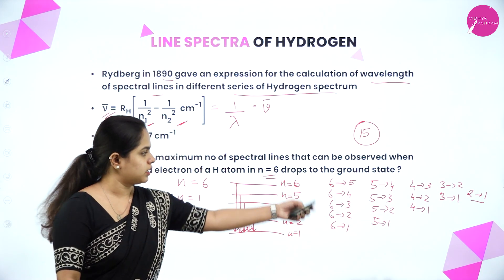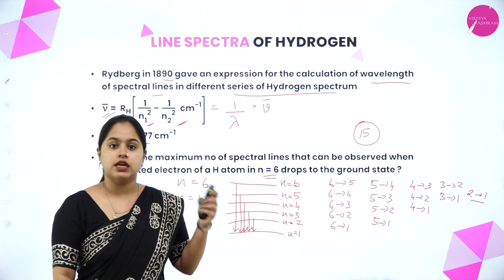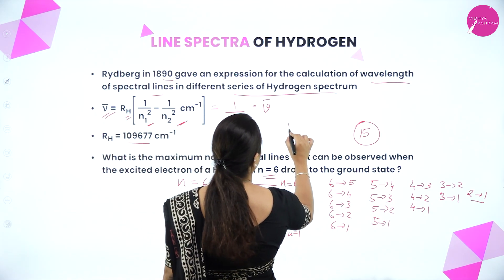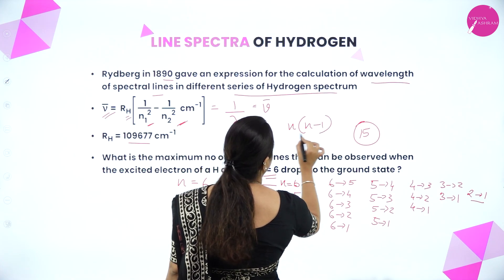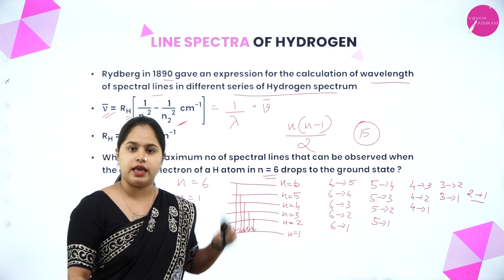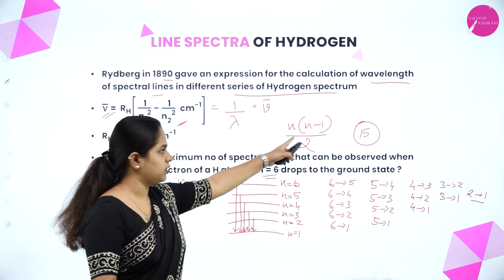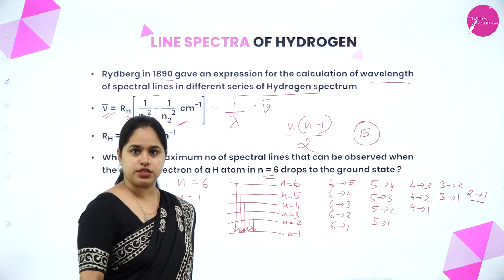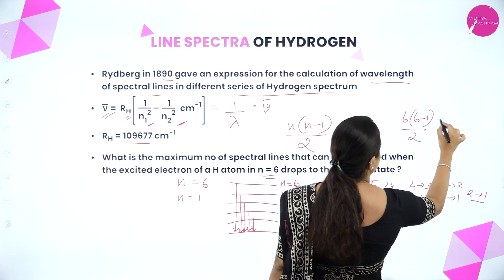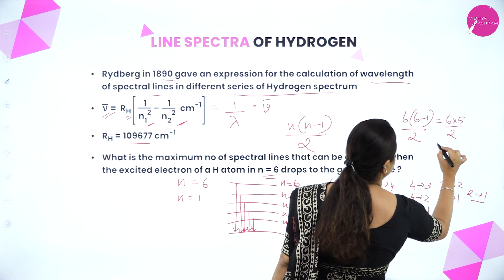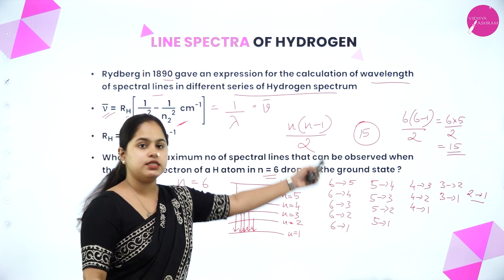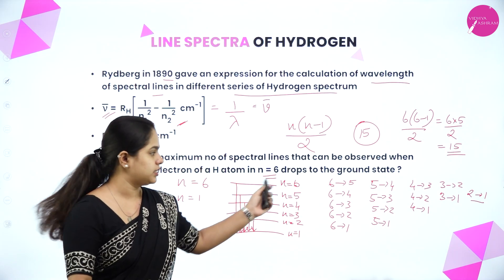In all cases, the number of spectral lines can be calculated using the general formula: n(n−1)/2, where n corresponds to the energy state from which the electron is falling back. Substituting n=6: 6×5/2 = 30/2 = 15 spectral lines. So this equation can be used for these types of problems.